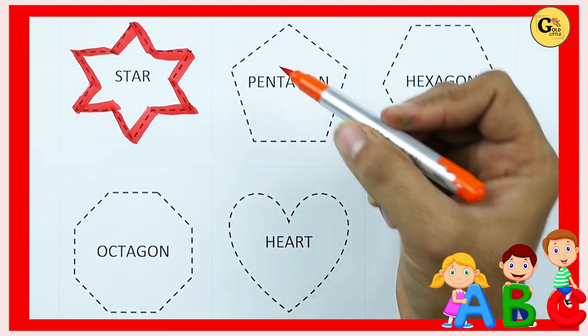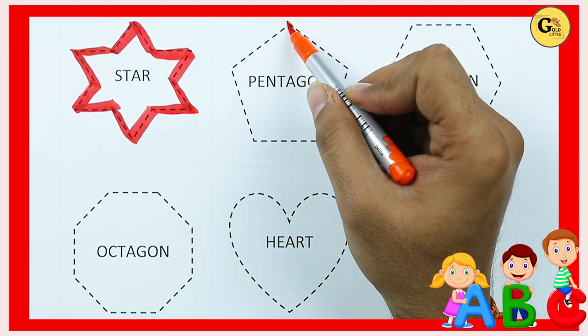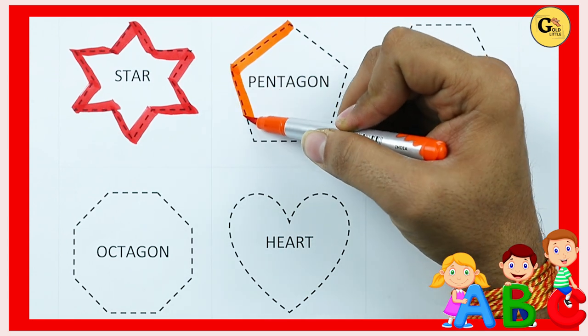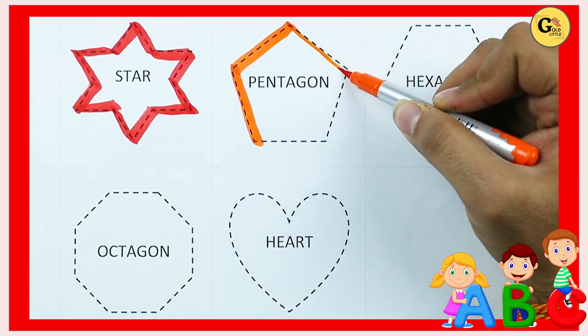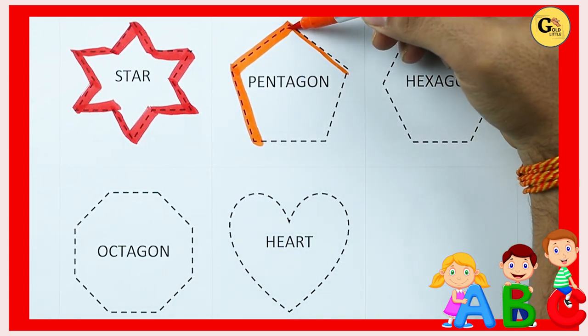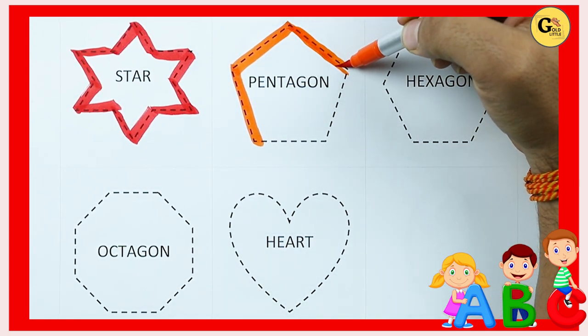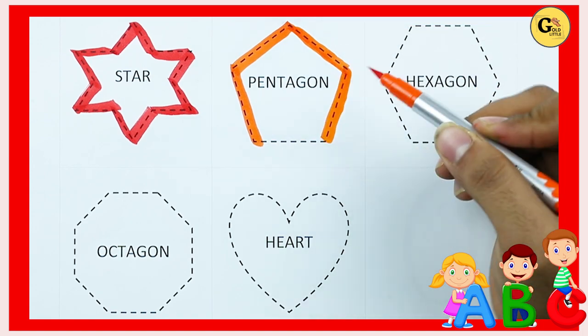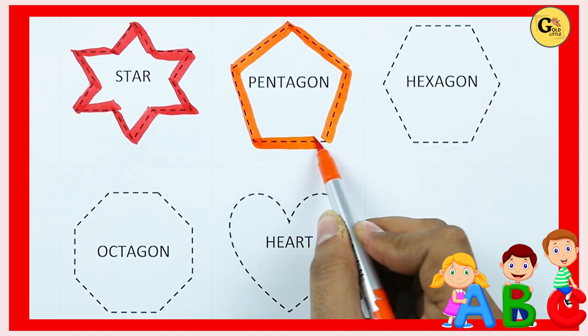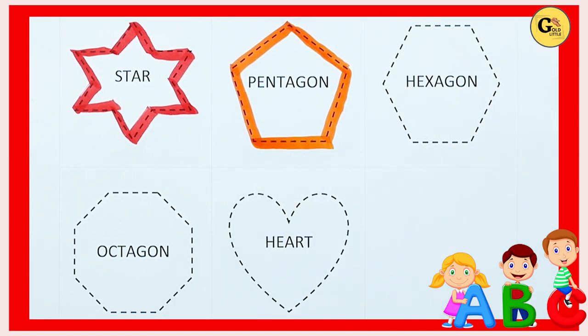Pentagon: one line, two line, three line, four line, five line. It's a pentagon.